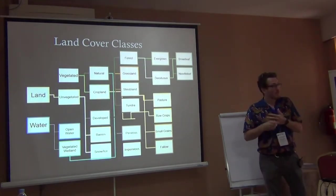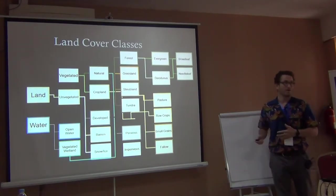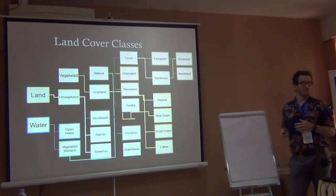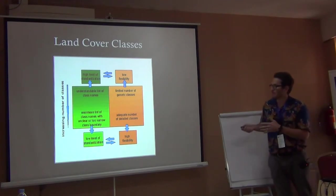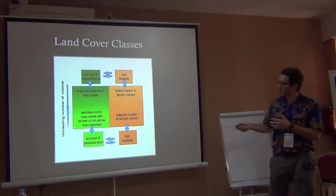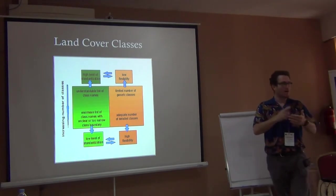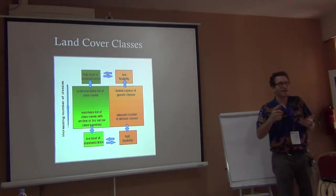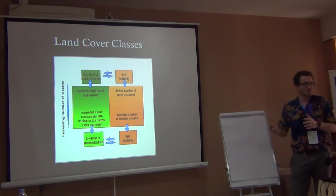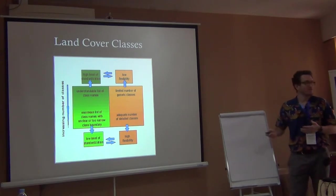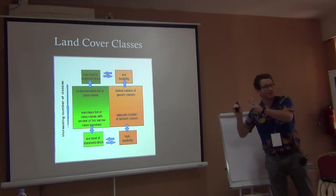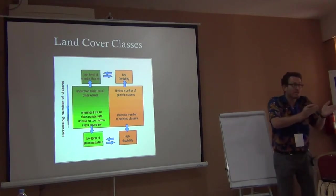The point is we can start very basic or get very detailed. Obviously it's difficult for the satellite to recognize each species, but it's possible with human help. With a high number of classes, we have detailed descriptions like broadleaf deciduous, evergreen needleleaf, perennial grasslands, annual grasslands — but a low level of standardization and a high level of flexibility. Because when we start with a lot of detail, we can always aggregate back to just vegetated or unvegetated.